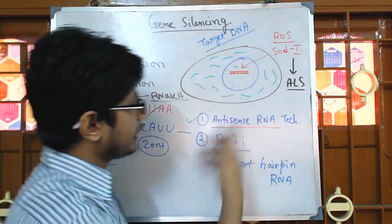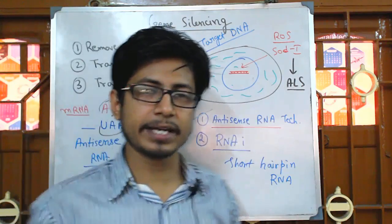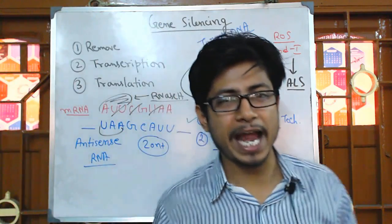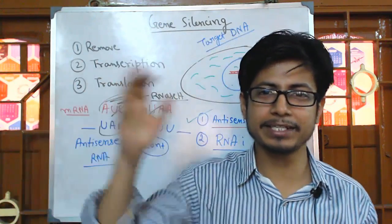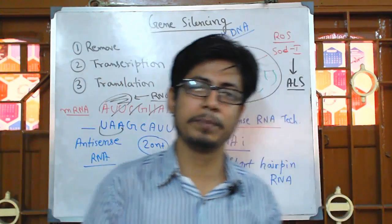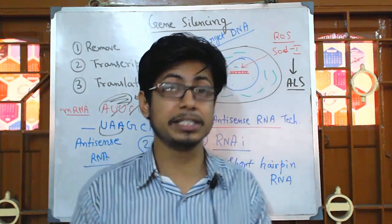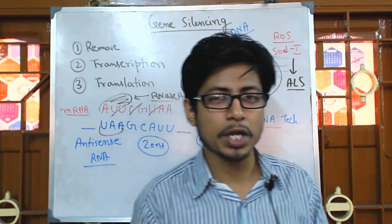The problem with antisense RNA is that since we are targeting mRNA, there will be many copies of mRNA produced from the specific gene. So we need to have very high concentration of antisense RNA delivered inside the cell to go against the produced mRNA. That in essence is antisense RNA technology and antisense RNA mediated gene silencing.